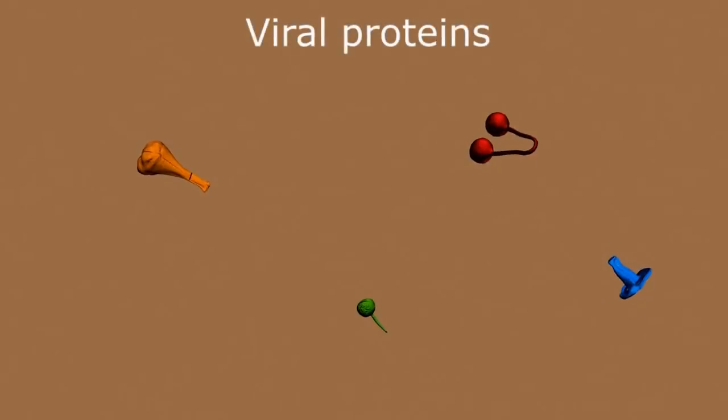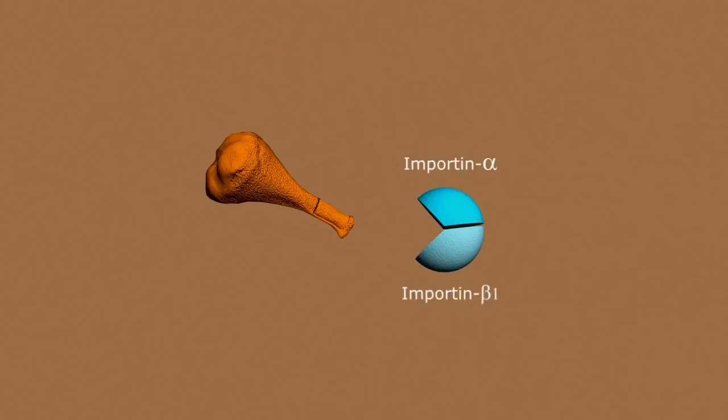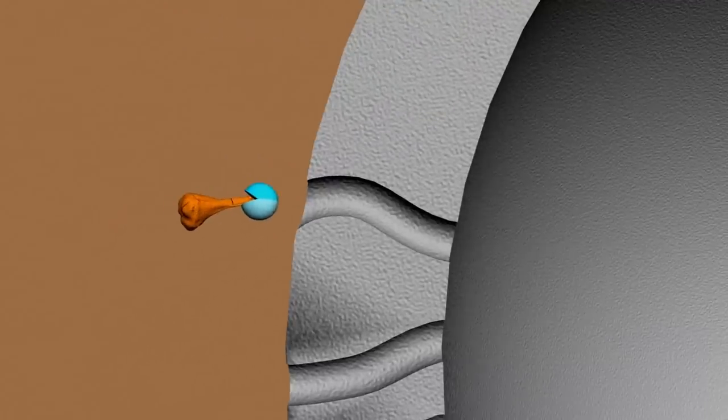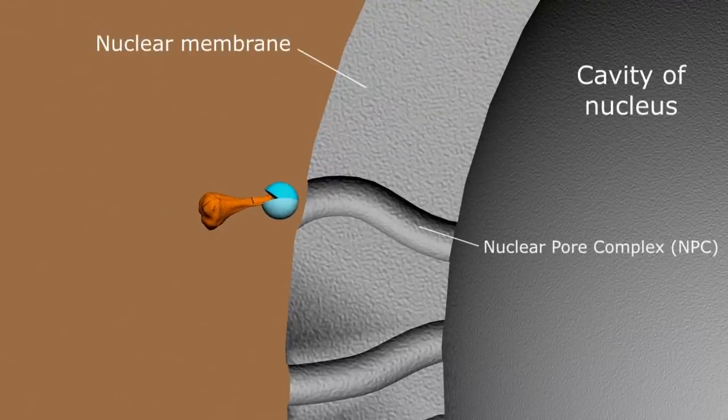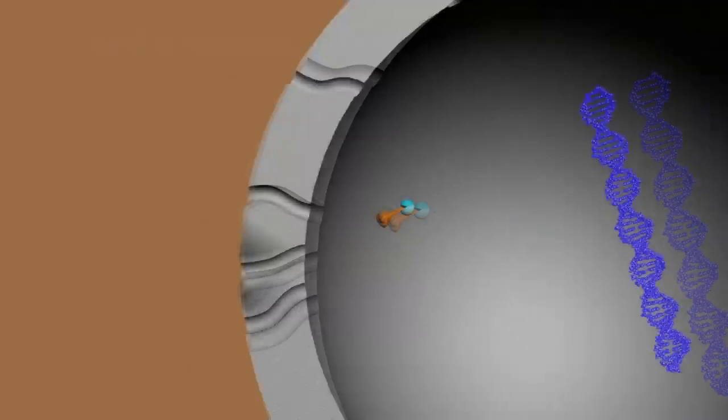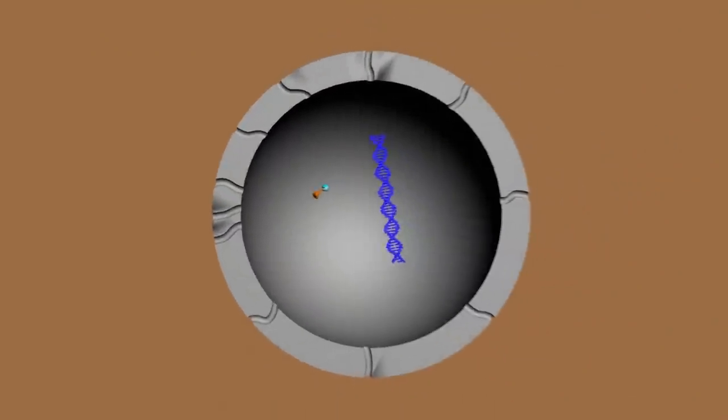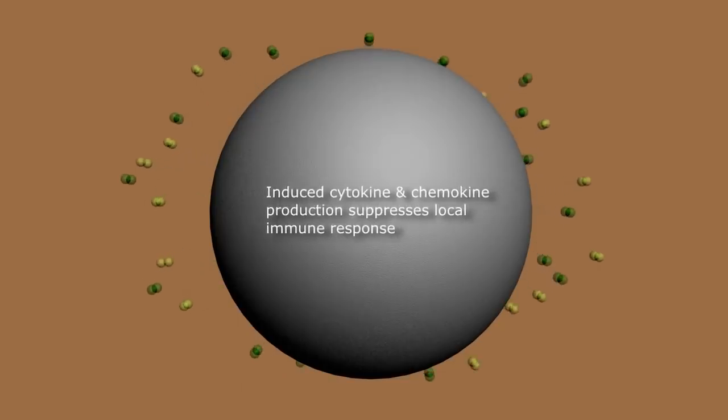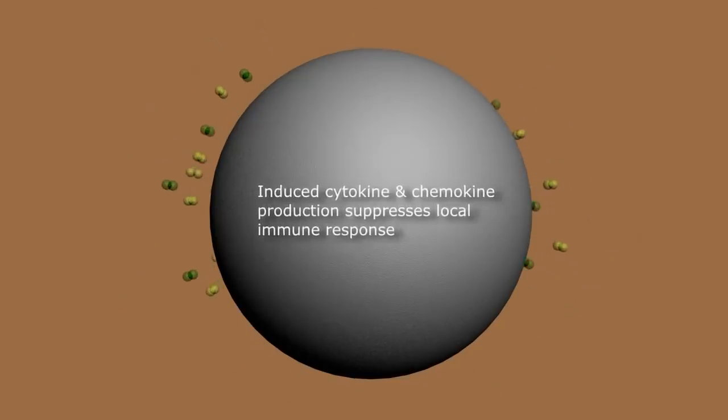These can be degraded and ingested by the host cell or, based on in vitro studies, can be picked up by importin alpha and importin beta-1 nuclear transport proteins. These nuclear transport proteins then guide the viral proteins through nuclear pore complexes or anatomic channels of the nuclear membrane. Theoretically, these imported protein complexes somehow induce the production of cytokines and chemokines which suppress the local immune response, allowing the virus to replicate unchecked.